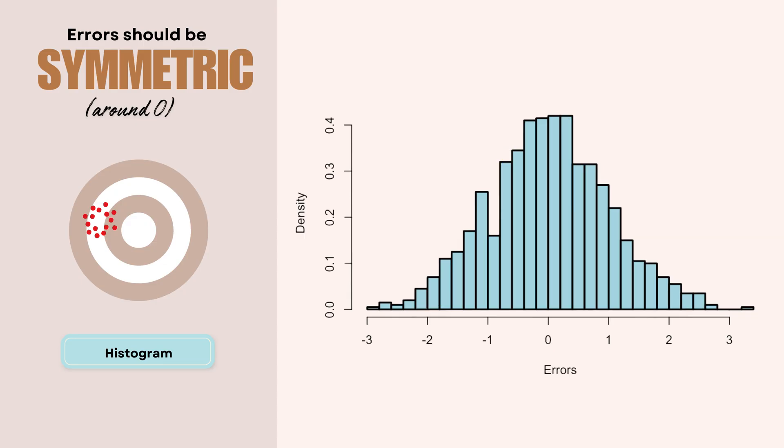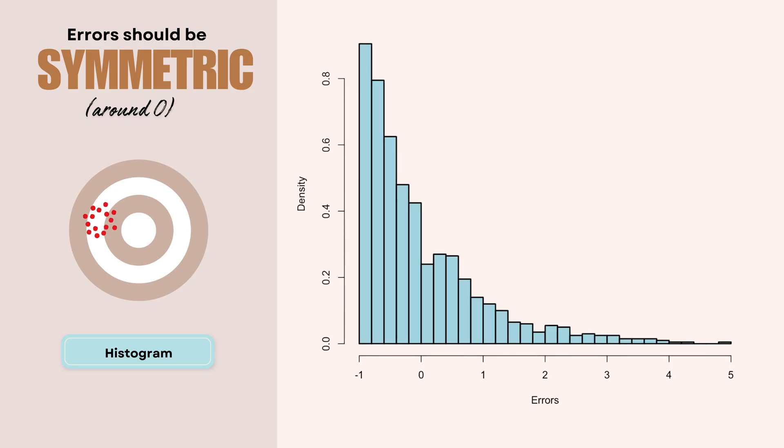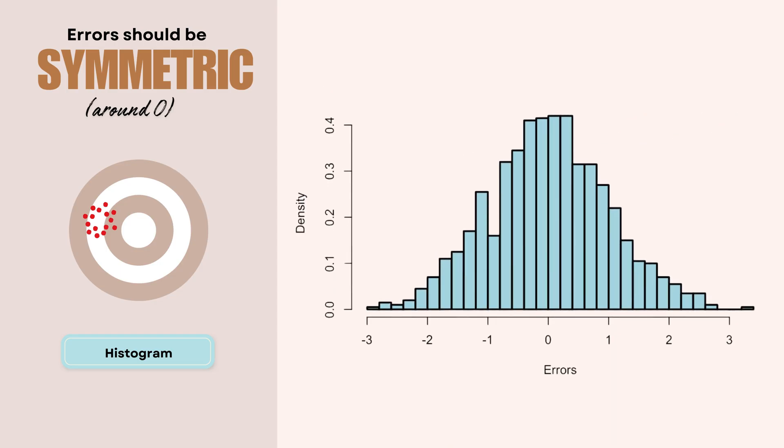Why does this symmetry matter? Symmetry in our errors is crucial. Because if our histogram leans left or right, it means that we're consistently over or under predicting. And this bias suggests that our model is systematically wrong in one direction. You can think of it like a weighted coin. If it lands on its head more often than tails, then something's not right. In technical terms, it means that our average or our mean should be very close to zero. The median also should be near zero. And both sides of the distribution should mirror each other.